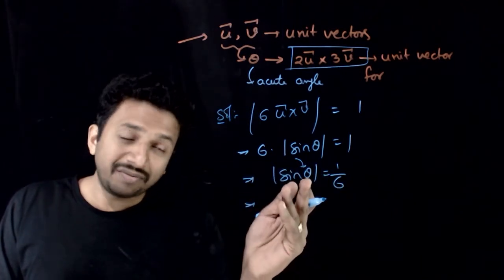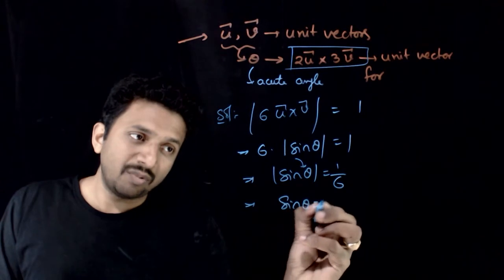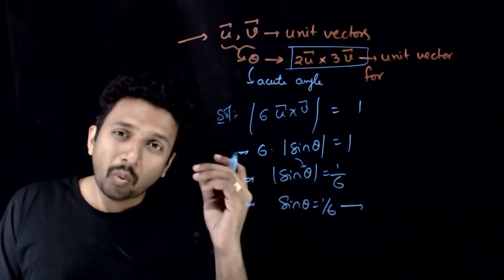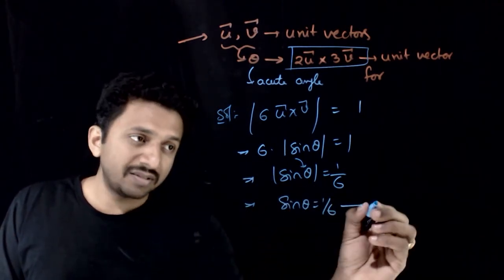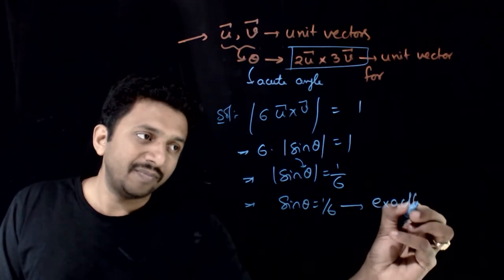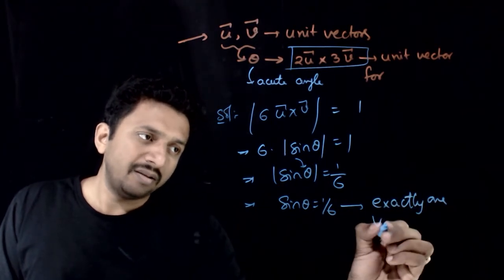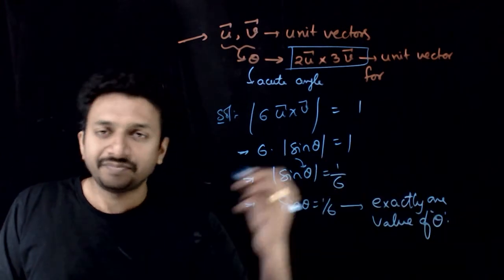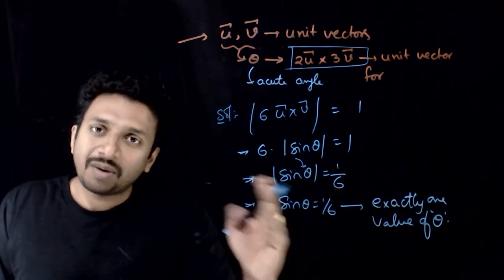So between theta is acute, mod sin theta becomes sin theta is equal to 1 by 6. Since we have only one value in the first quadrant which satisfies this, that is exactly one value of theta which is sin inverse of 1 by 6.